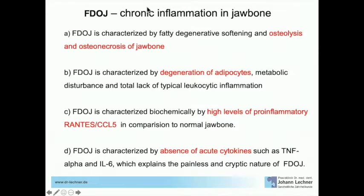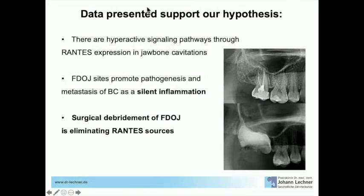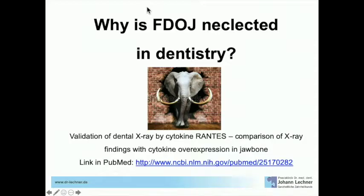So we can say: FDOJ is characterized by fat degeneration, degenerative softening, and osteolysis; by degeneration of adipocytes; biochemically by high levels of pro-inflammatory RANTES; and by absence of acute cytokines. This is what we propose — just clean these areas. The next question — the next elephant in the room — is: why is this FDOJ neglected in x-ray diagnosis in dentistry?